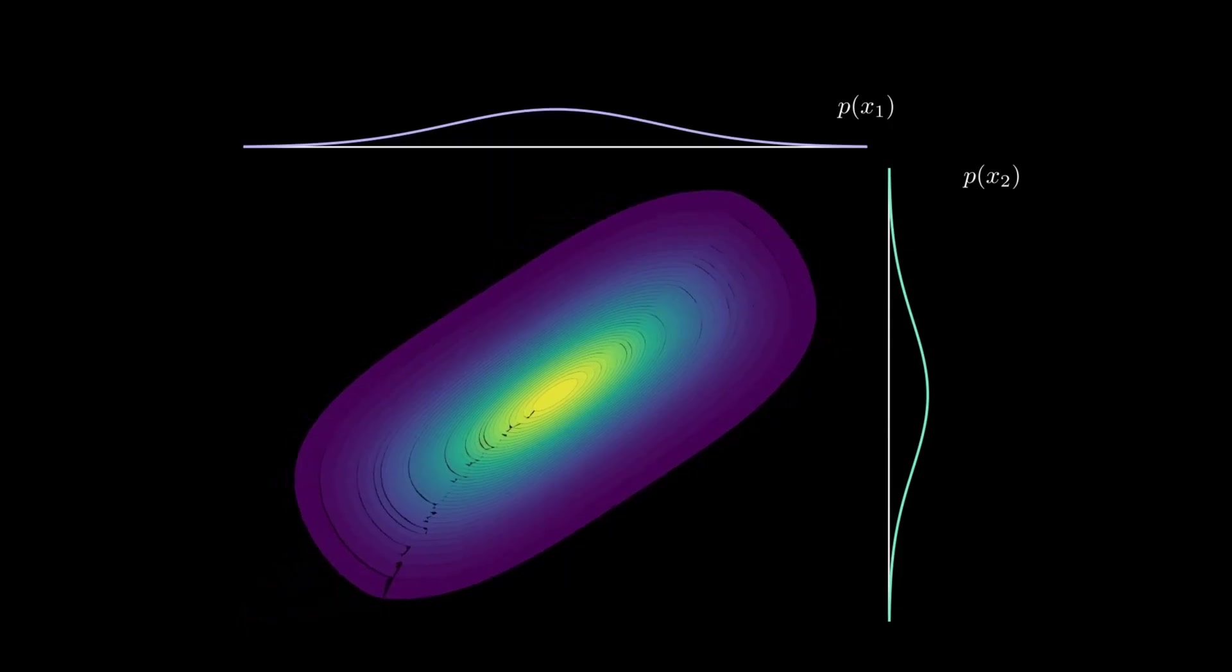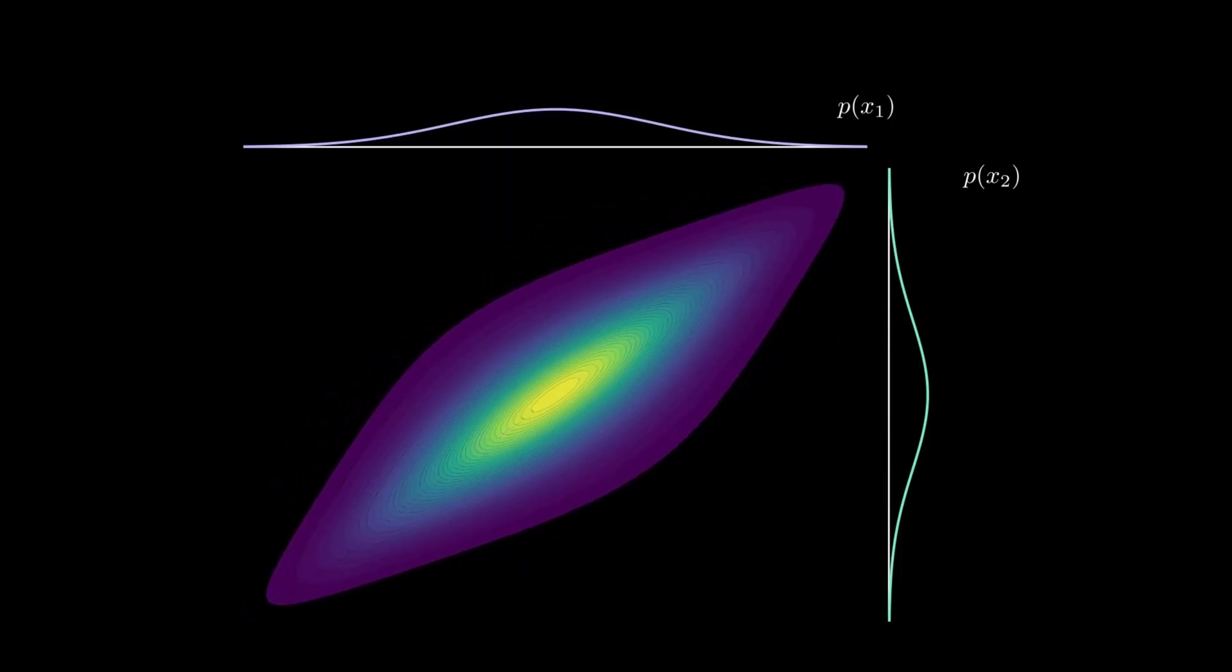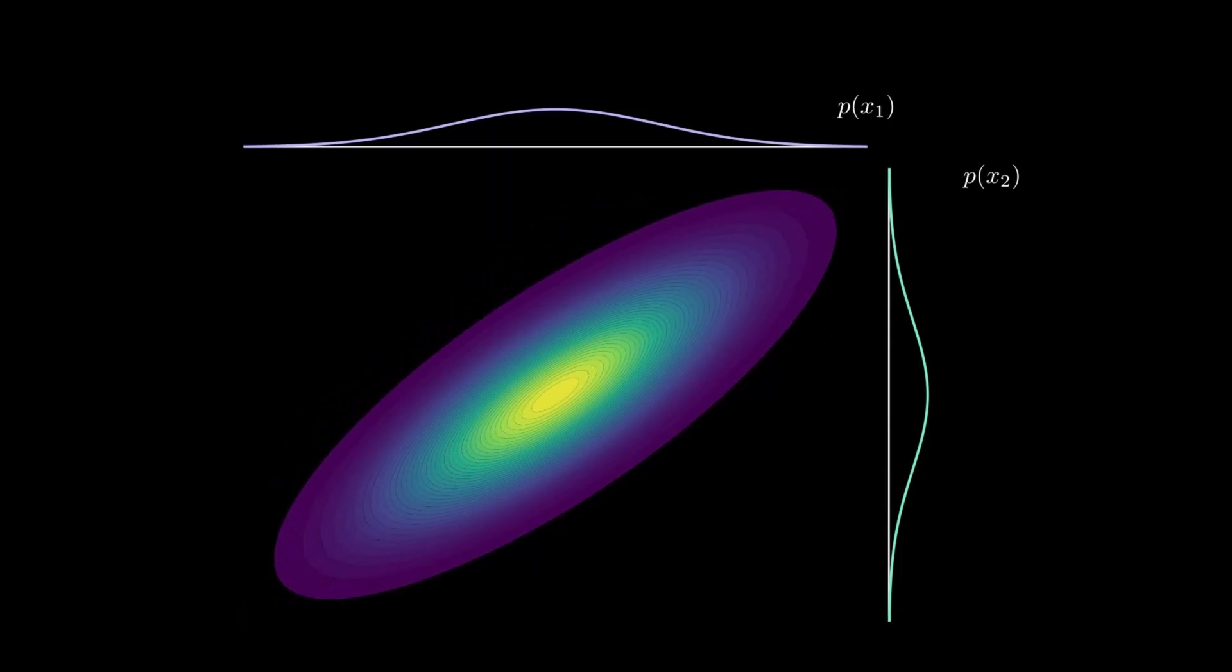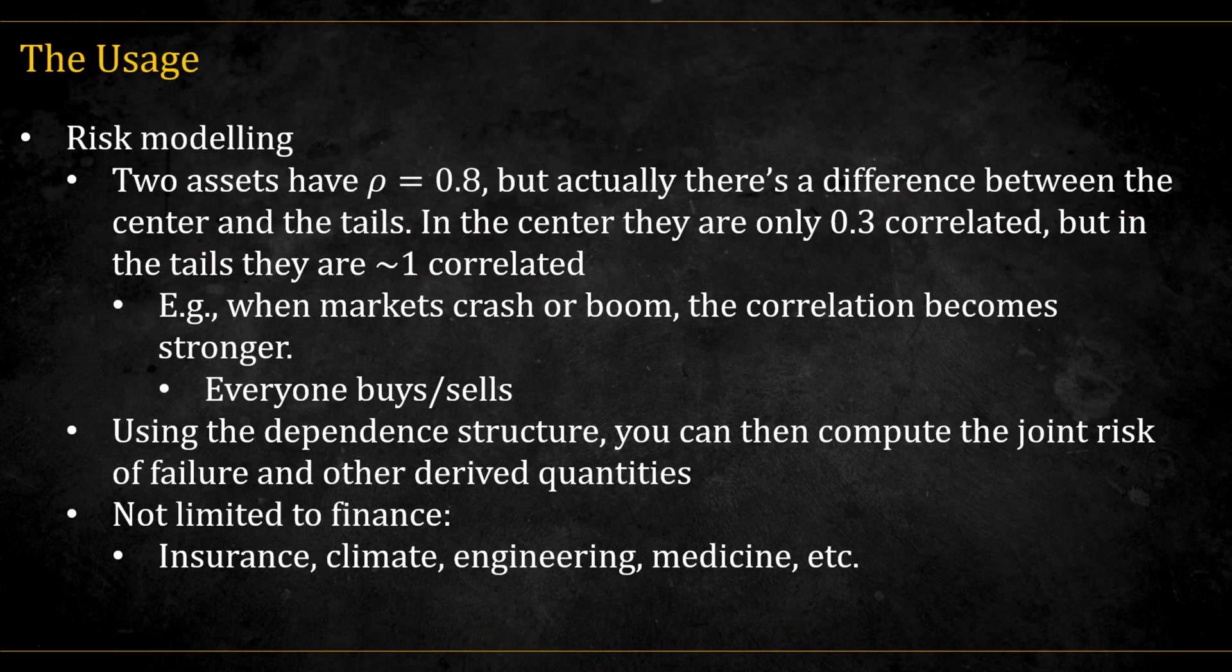So copula is essentially a form of dependency structure that is more complete than a simple correlation. Before we jump into the math, let's understand why copulas are needed.